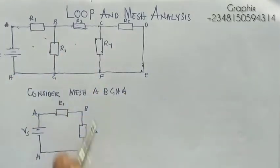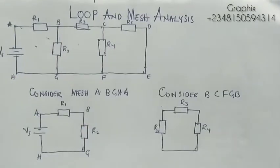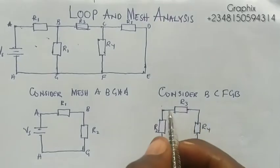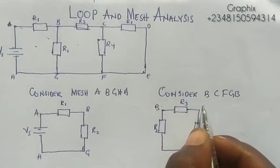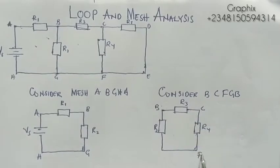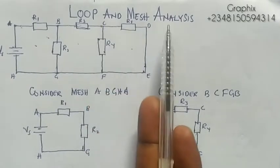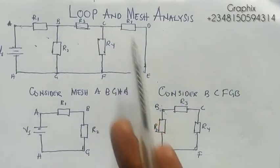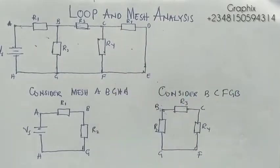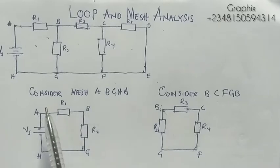I can consider each one individually. This is another mesh: b-c-f-g-b — from this beginning back to this beginning is called a mesh. Similarly, the other part c-g-e-f-c is another mesh. In this case you can call them loops too.